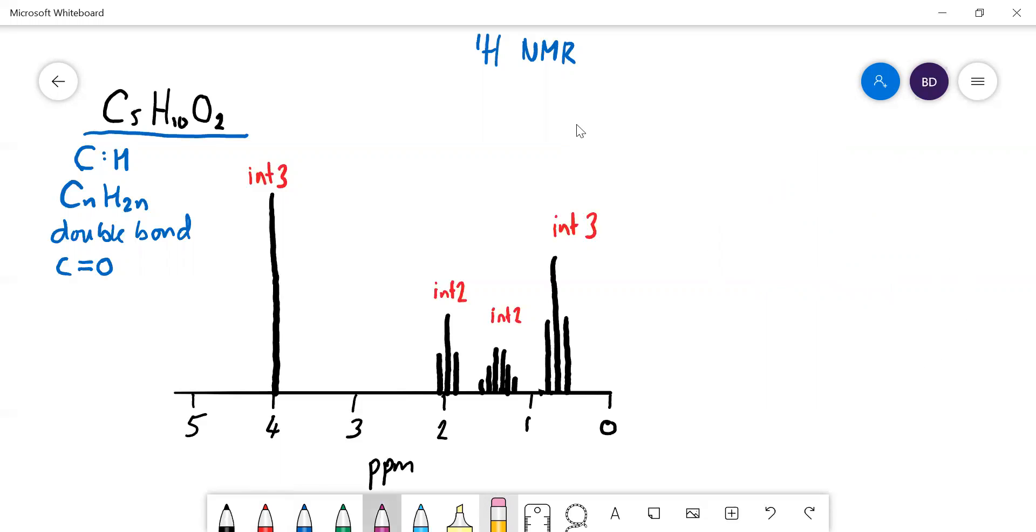Let's have a look at the integrated values. We've got a 3, which is probably a CH3. We've got a 2 here, which is a CH2, another CH2, and another CH3. We're pretty sure about that.